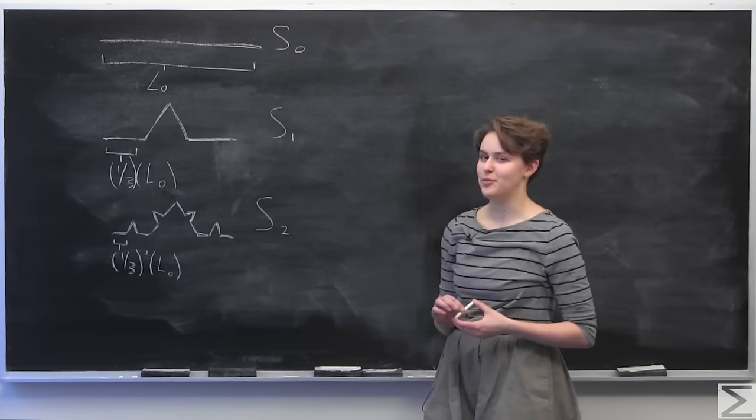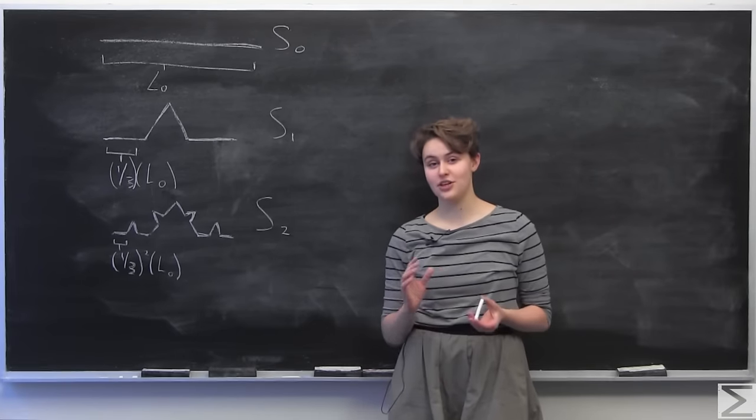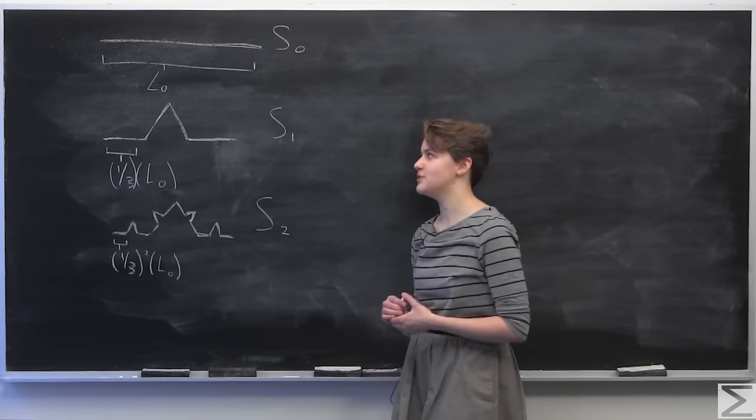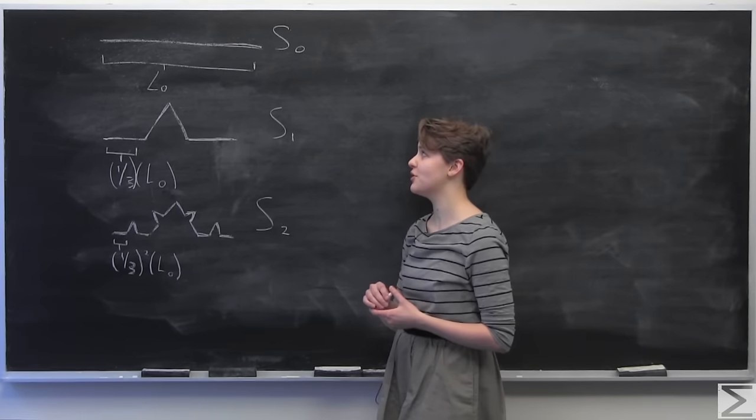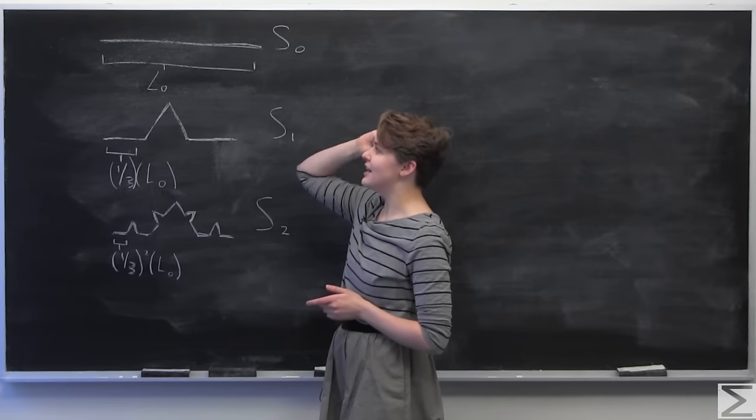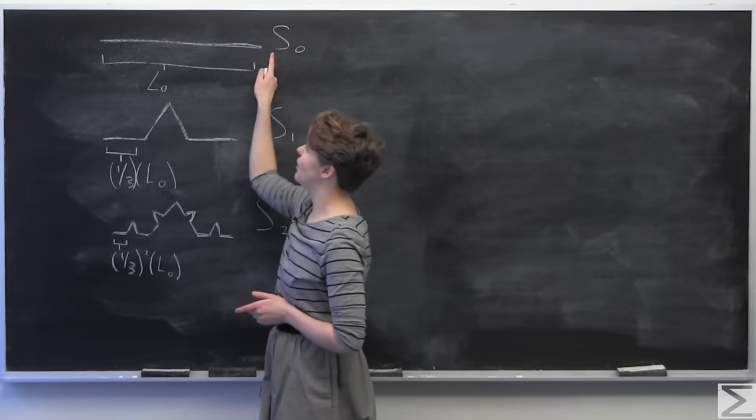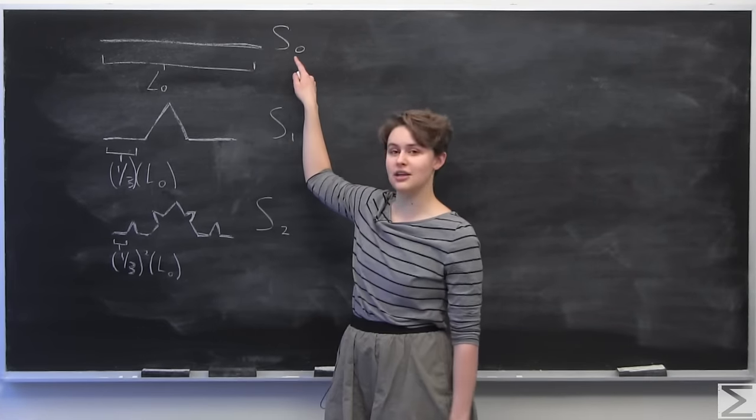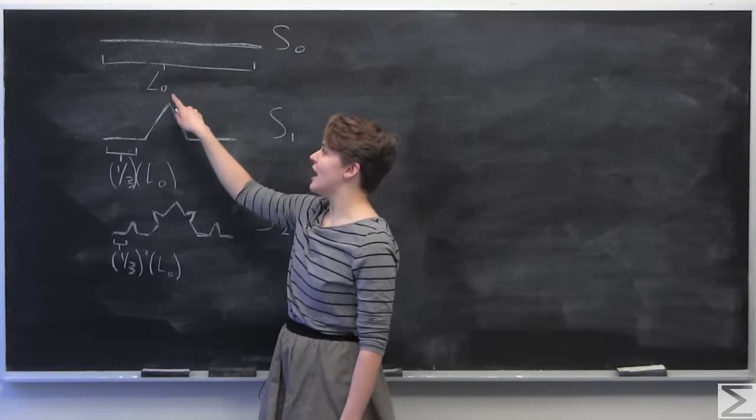This week's advanced problem of the week involves something a lot of us know and love called fractals. This particular fractal is called the von Koch curve. It's created by taking, you just draw initially one line segment, which we'll call S0, and it has length L0.